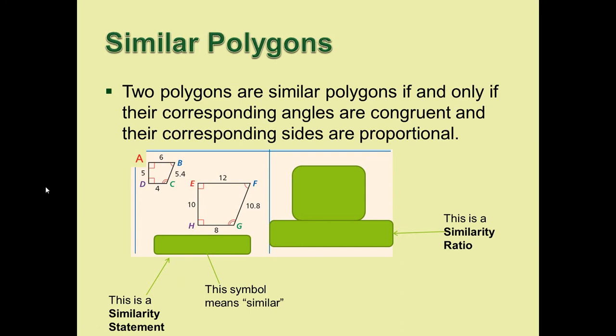We say that two polygons are similar, if and only if their corresponding angles are congruent, like we saw in GeoGebra just now, and their corresponding sides are proportional. Notice in here, we have a trapezoid that's on its side. It's not an isosceles trapezoid, but it is a trapezoid because of the parallel lines. ABCD trapezoid is similar to EFGH, because they're the same shape, and all their angles are congruent.